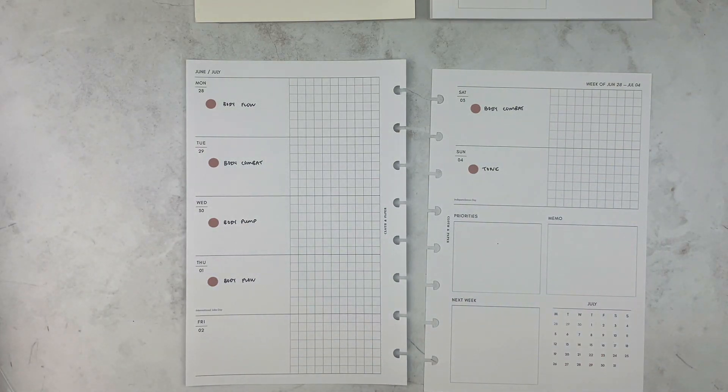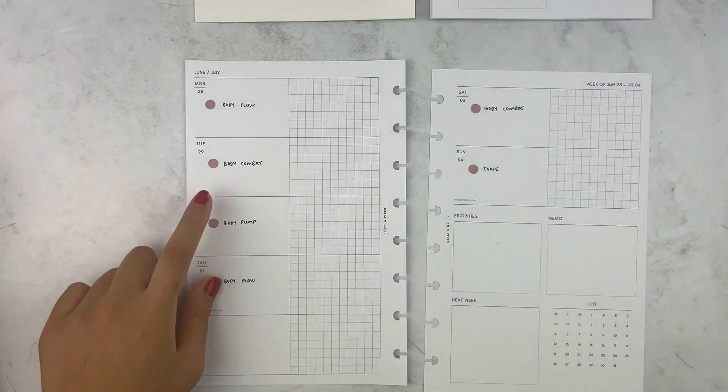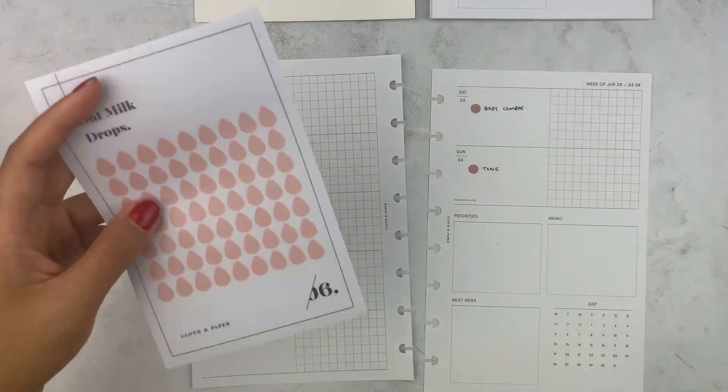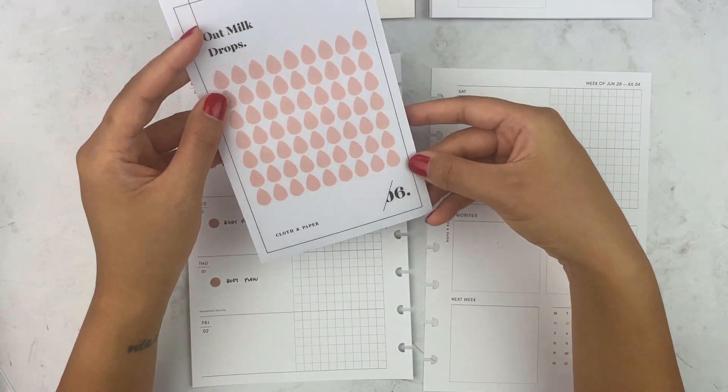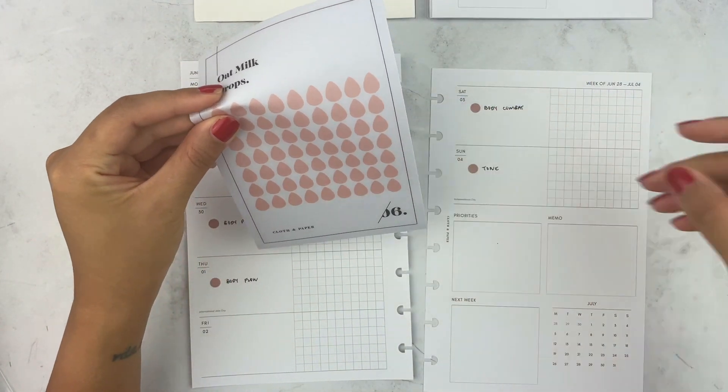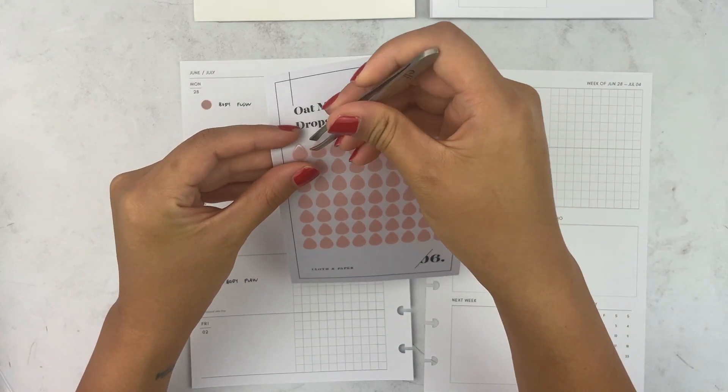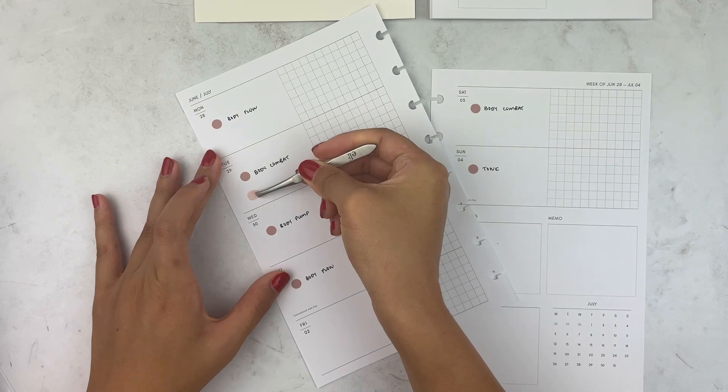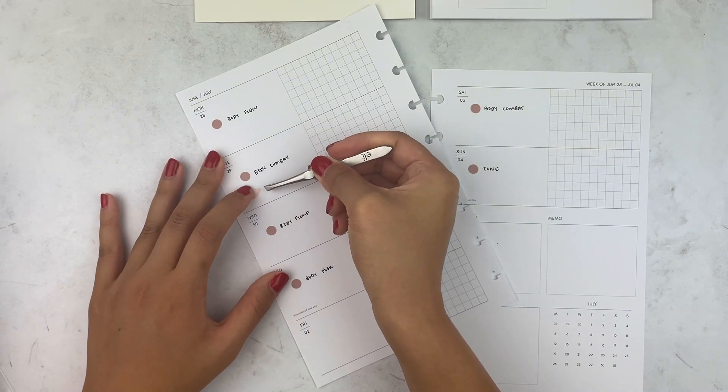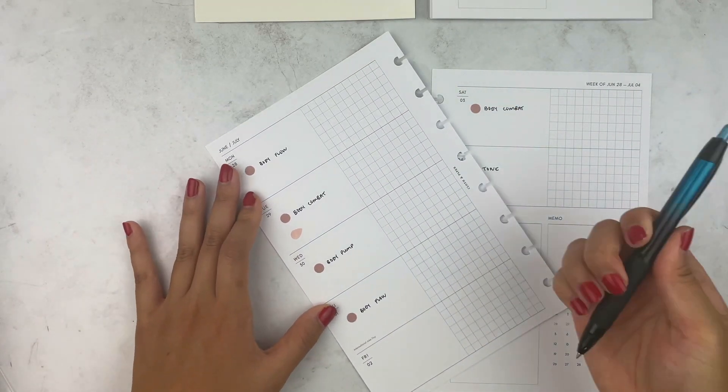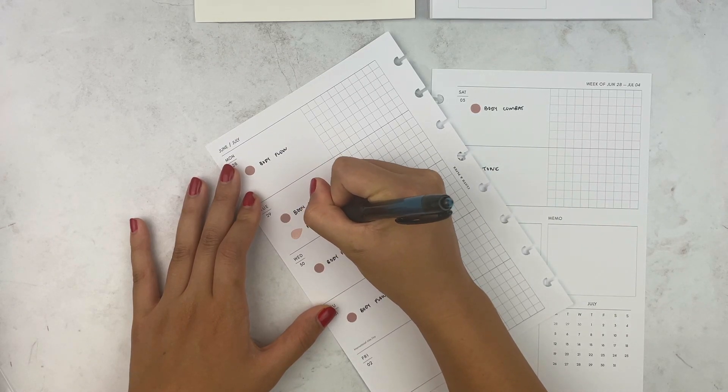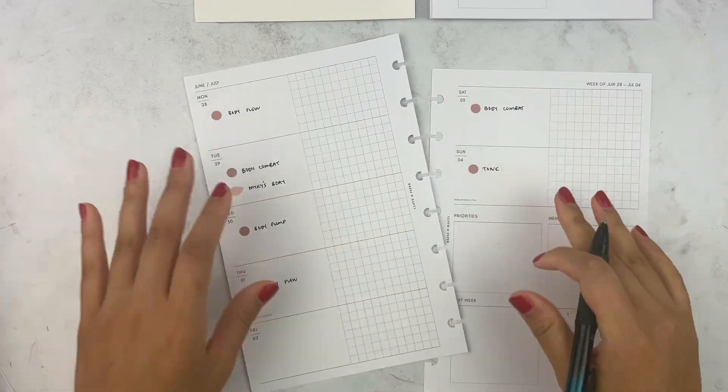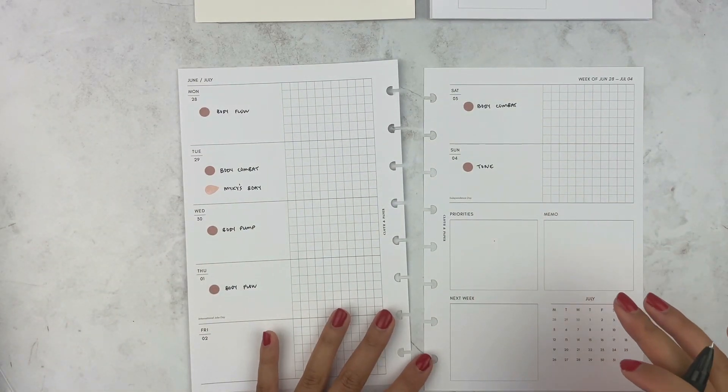And then I do want to mark my friend's birthday. Okay. I grabbed these. These are the oat milk drops from Cloth and Paper also gifted to me by Martha. So thanks bestie. I'm going to use this to mark my friend's birthday right there. Mikey. So I remember to greet him.